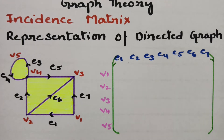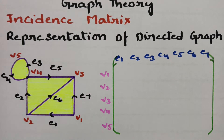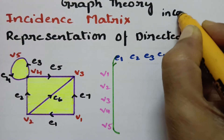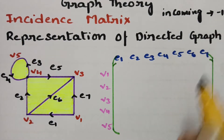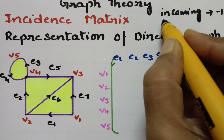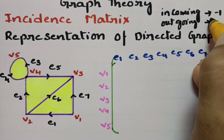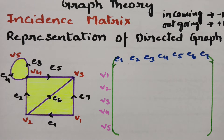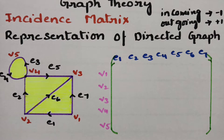There is a logic here. For incoming edges we represent with minus 1, for outgoing edges we give plus 1, and if there is no connection at all we give 0. This is the simple logic to keep in mind.